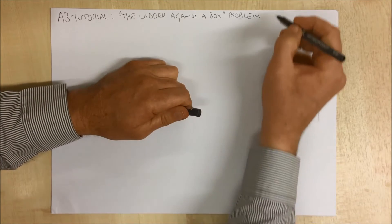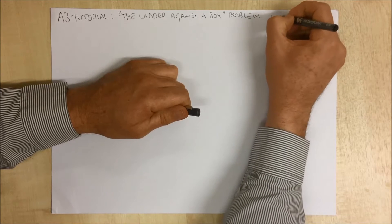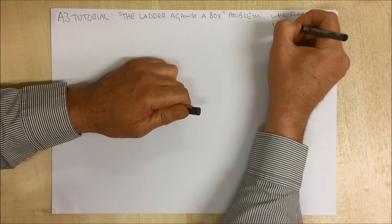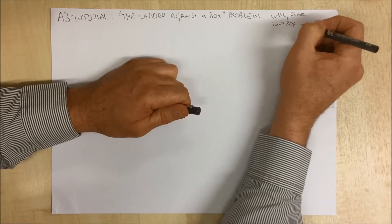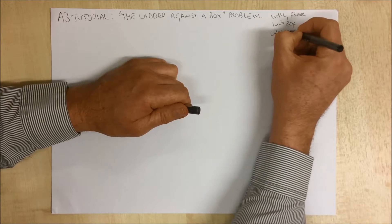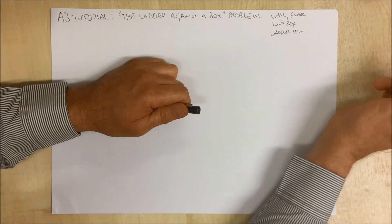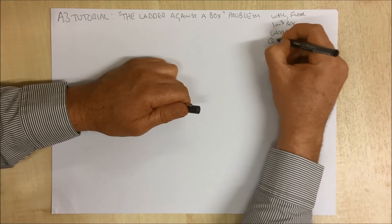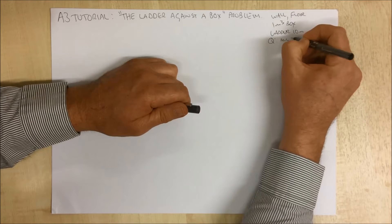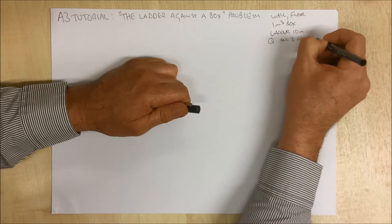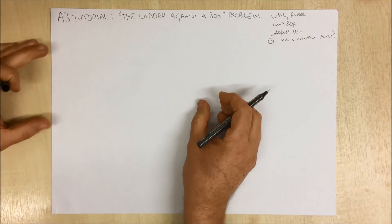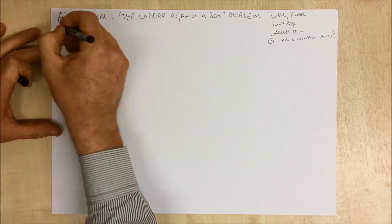In this problem we have a wall, a floor, and a one cubic meter box and a ladder. The ladder is 10 meters long and the objective is to find the dimensions for all three contact points. The easiest way to show what we're talking about here is to draw it out.